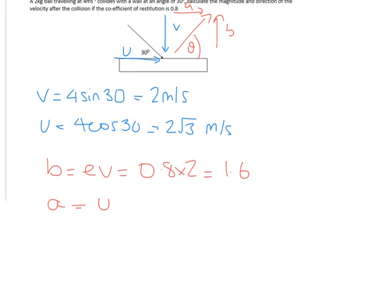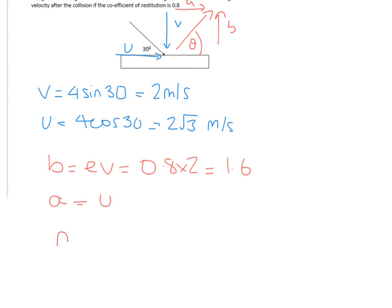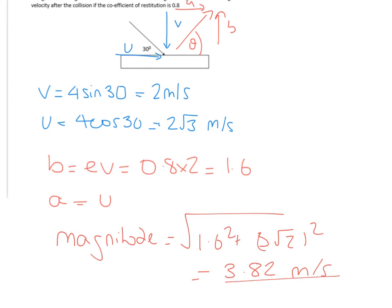So, if we want to calculate the magnitude, we're going to need to use our rules of vector addition, like this. And, if you plug that into your calculator, you should end up with 3.82 meters per second.